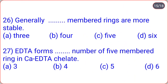Generally, 5-membered rings are more stable. EDTA (ethylenediaminetetraacetic acid) forms 5 five-membered rings in the calcium-EDTA chelate.